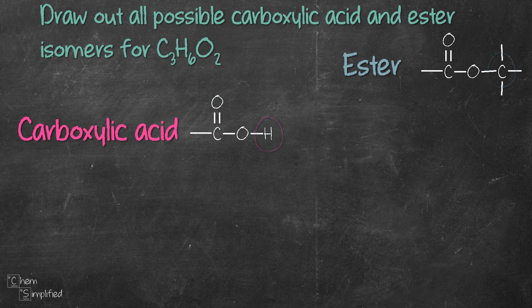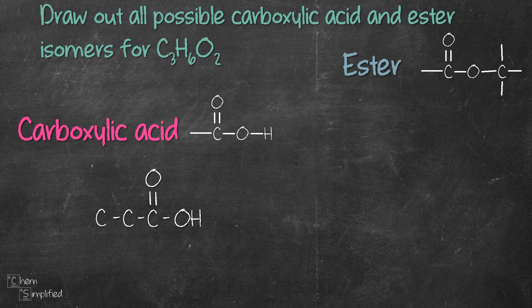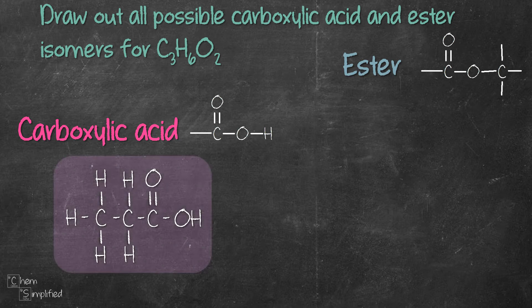Let's start with carboxylic acid. Let's place three carbons straight in a row and then add in the carboxyl group COH at the end, and fill in the remaining bonds on the carbons with hydrogen. Each carbon makes four bonds, so we fill in with the appropriate number of hydrogens. Looks like we've completed our first isomer. There's no other way to draw carboxylic acid with three carbons, so let's move on to ester.